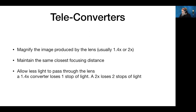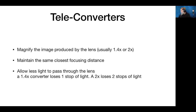Teleconverters go between the lens and the camera and magnify the image from the lens. They're usually 1.4x or 2x converters. They maintain the same closest focusing distance of the lens but allow less light to pass through — a 1.4x converter loses one stop of light, and a 2x loses two stops.